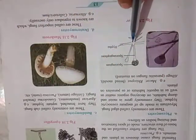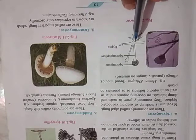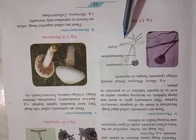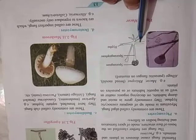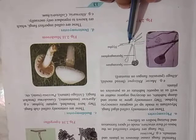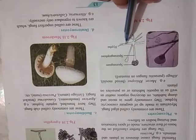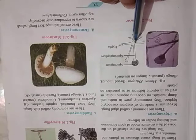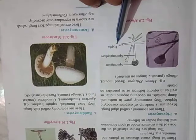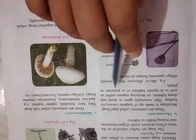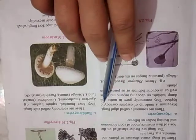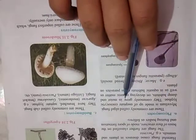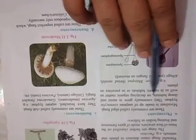It is also called as the algal fungi. The mycelium is made up of aseptic coenocytic hyphae. They commonly grow in moist and damp habitats.